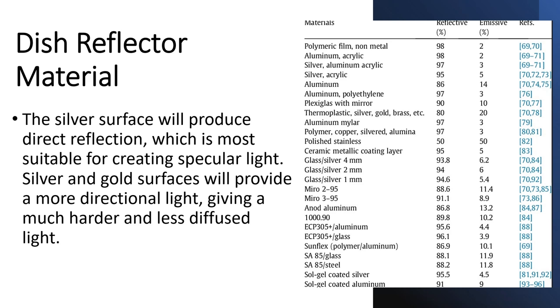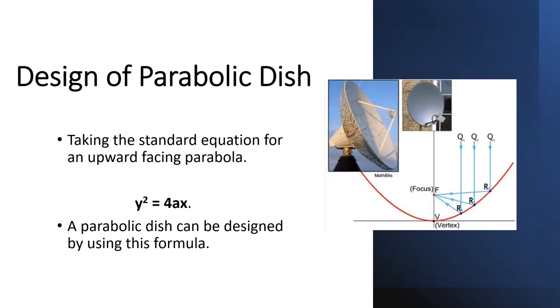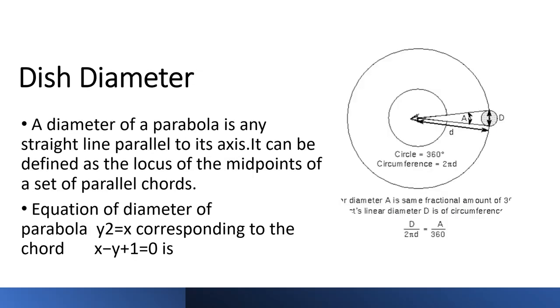Taking the standard equation for an upward facing parabola, Y² = 4AX. A parabolic dish can be designed by using this formula. A diameter of a parabola is any straight line parallel to its axis. It can be defined as the locus of the midpoints of a set of parallel chords. The equation of diameter of parabola Y² = X corresponding to the chord X - Y + 1 = 0.